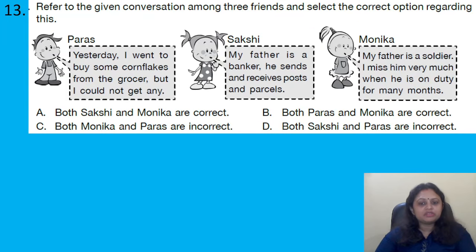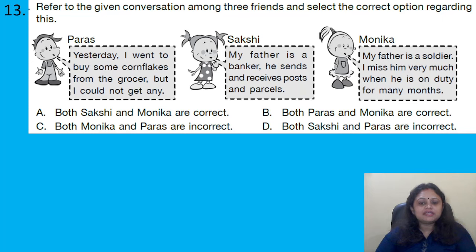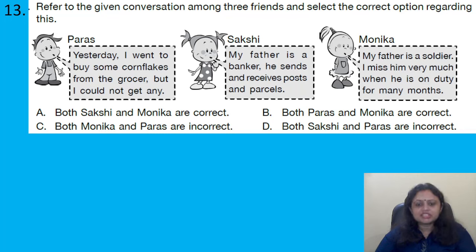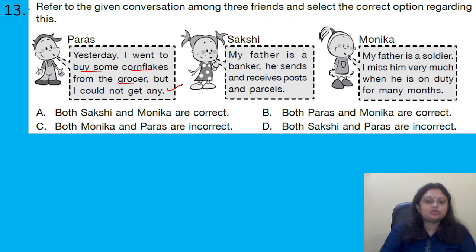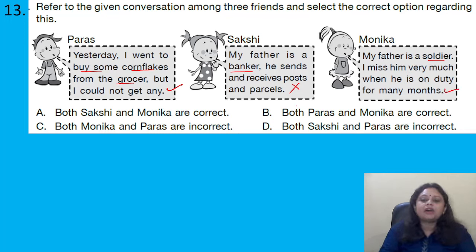Refer to the given conversation among three friends. Paras: yesterday I went to buy some biscuits from the grocer but I could not get any. Sakshi: my father is a banker, he sends and receives post and parcels — incorrect, as bankers do not do this; postmen do. Monika: my father is a soldier, I miss him when he is on duty for many months — correct. So Paras and Monika both are correct.